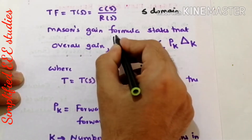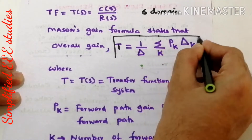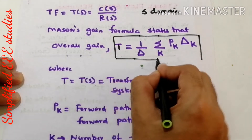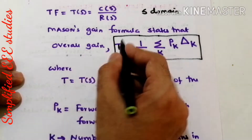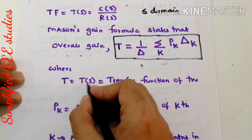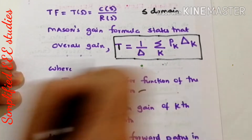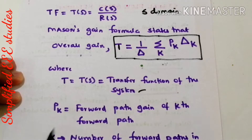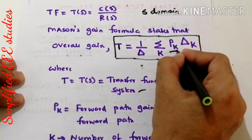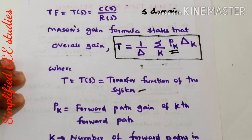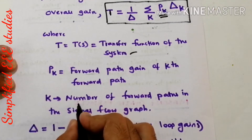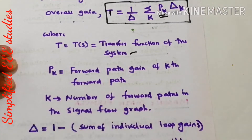This is Mason's gain formula, one of the popular formulas in signal flow graph, really useful to calculate the transfer function of a complicated signal flow graph. Here T is the transfer function T(S) of the system. pk is the forward path gain of the kth forward path, and k is the number of forward paths in the signal flow graph.